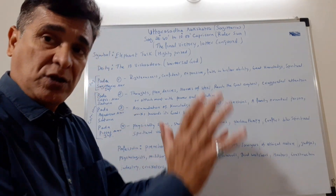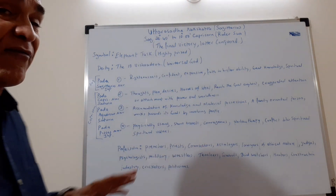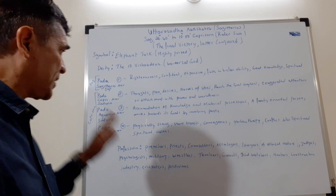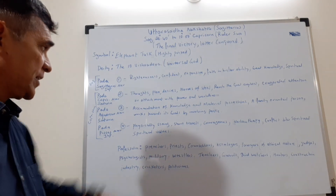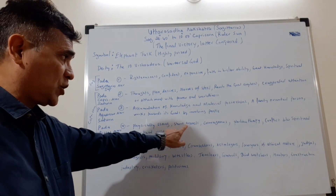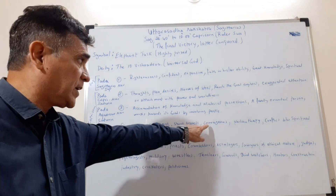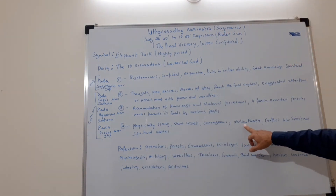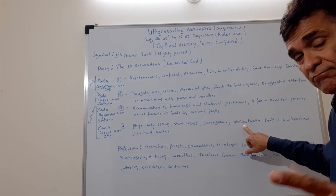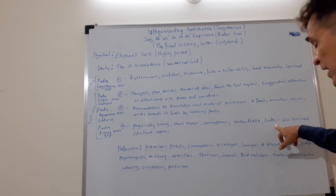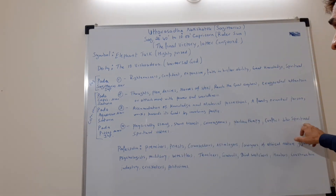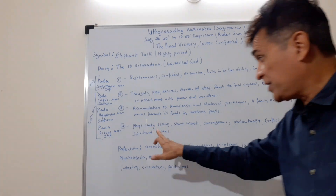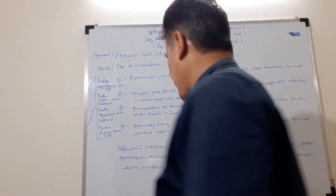In the fourth pada, still in Capricorn, the Navamsha becomes Pisces ruled by Jupiter. Physically you are very strong, you always have short travels, you are very courageous, and you are philanthropic — philanthropy is a main character trait. There can be a conflict between spiritual and material values.